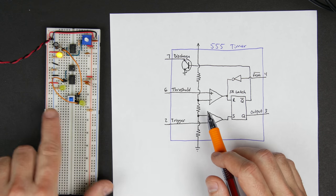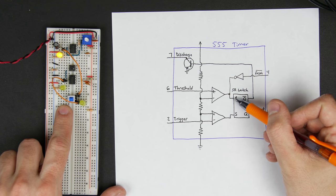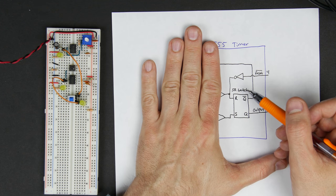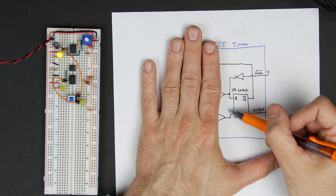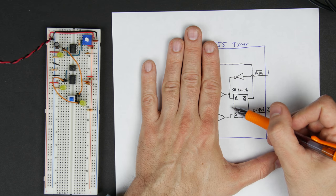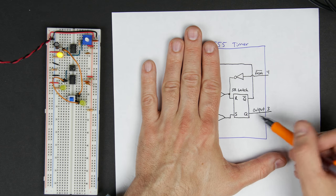And what we're going to do is basically hook this switch up to, imagine we could somehow get rid of all this stuff and just hook the switch up to the S and the R. So in one state it's setting, and in the other state it's resetting, and then we have our output.